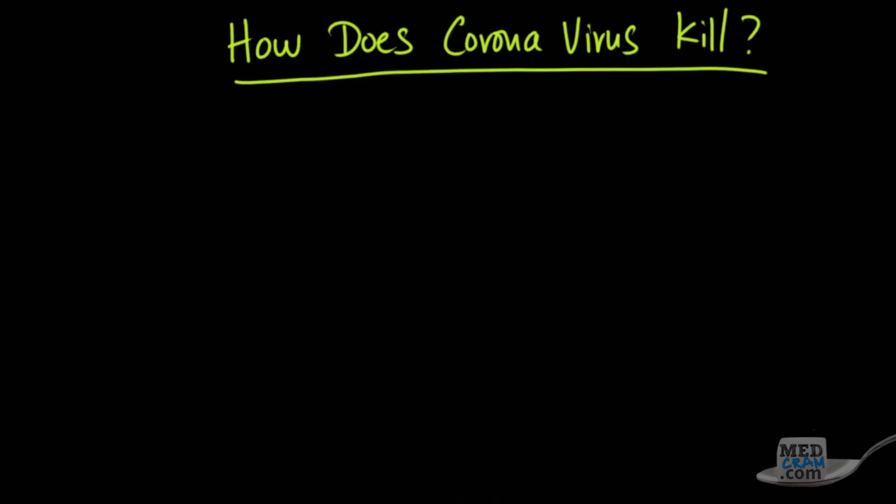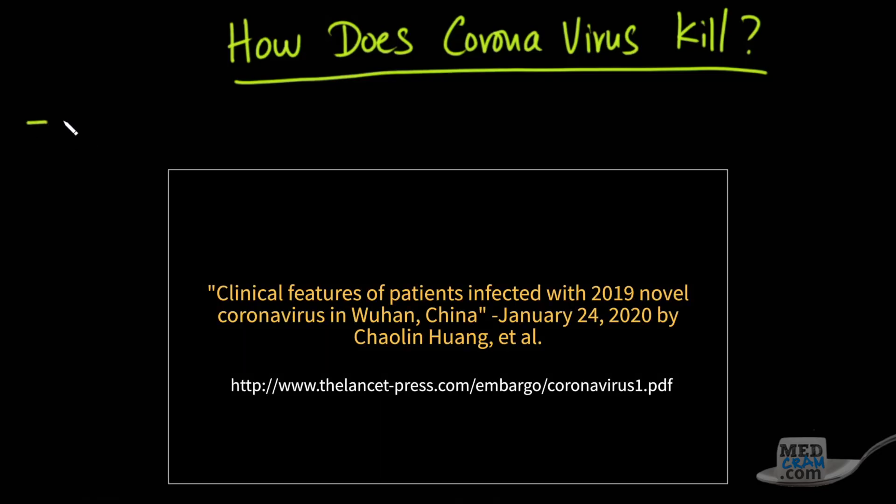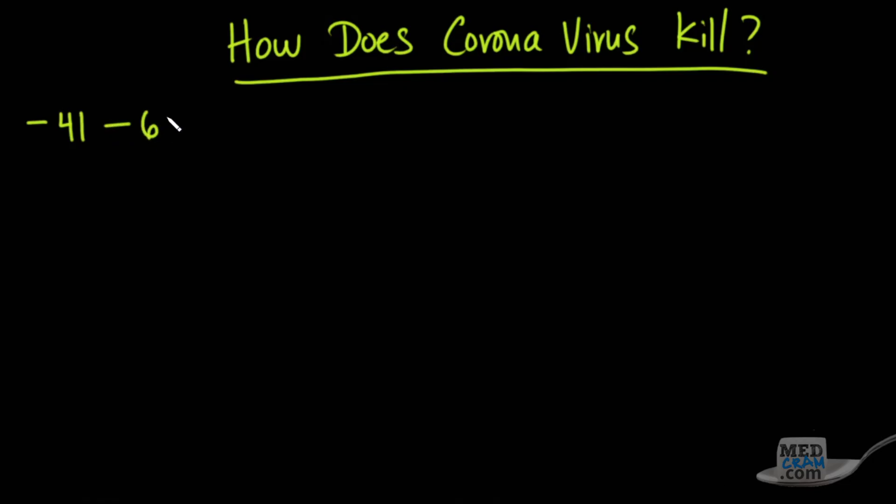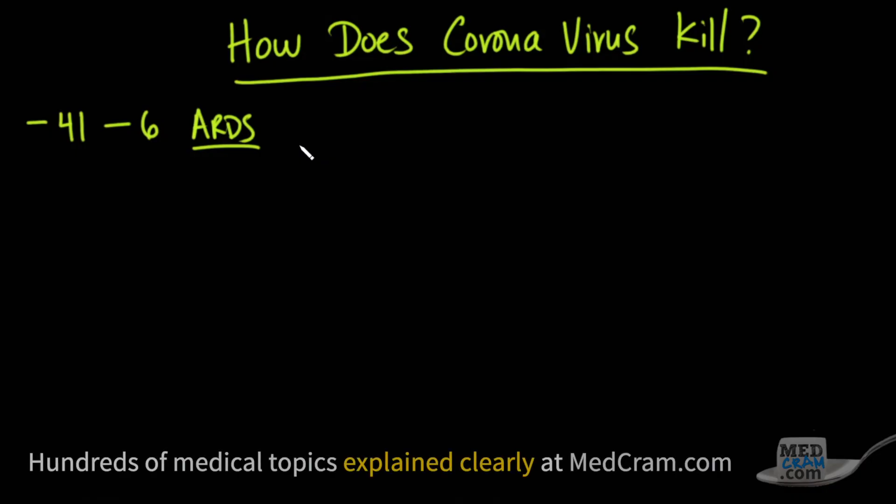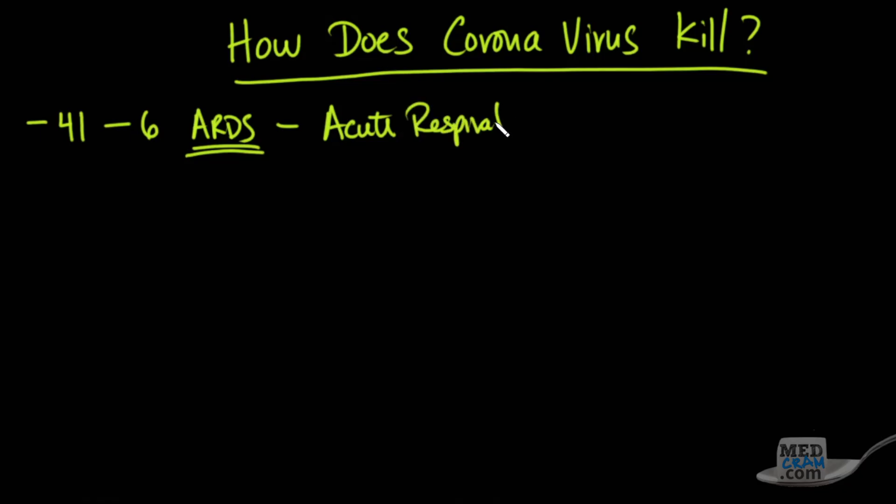There's a recent article in The Lancet that showed that of 41 people that were admitted to the hospital, six of them died, and all of them were on ventilators, and they died with something called ARDS. ARDS is how the coronavirus kills. It's not just the coronavirus, but many other viruses, including the influenza virus that we have every year. How is it that this happens? It's through acute respiratory distress syndrome, and I'm going to explain to you how that happens.